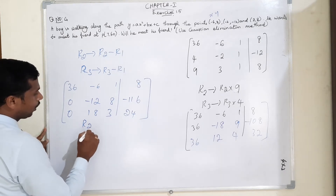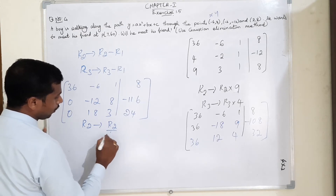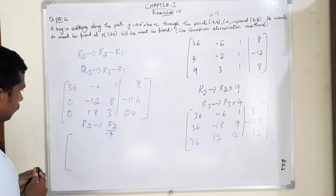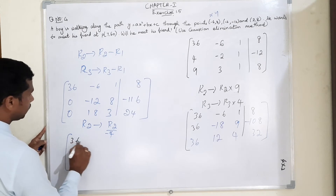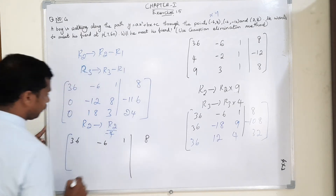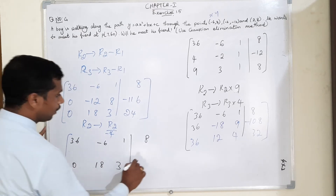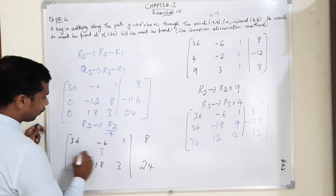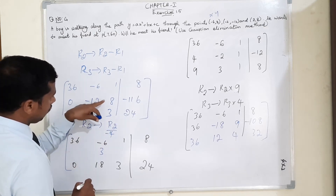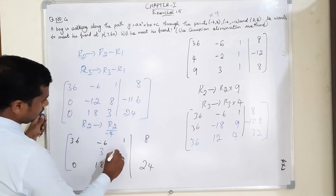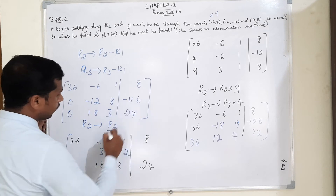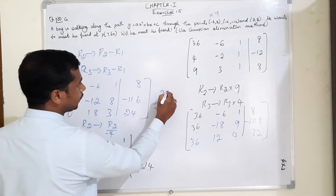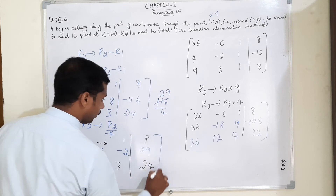R2 gives R2 divided by minus 4. R1 as it is: 36, -6, 1 | 8. R3 as it is: 0, 18, 3 | 24. For R2 divided by -4: minus minus cancel, -12 ÷ 4 = 3; -8 ÷ 4 = -2; 1 ÷ 4... 116 ÷ 4 = 29. This is positive 29.